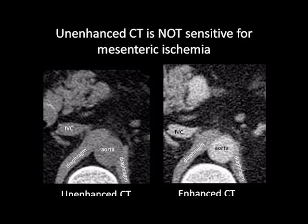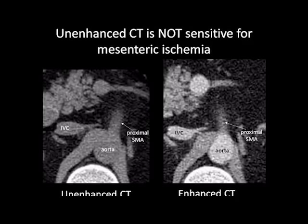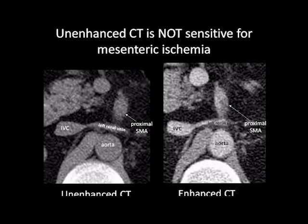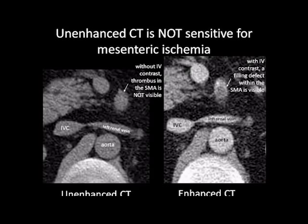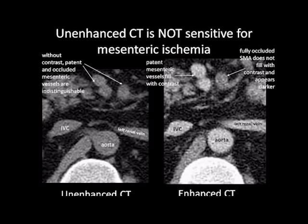As we descend into the abdomen, the proximal superior mesenteric artery, or SMA, becomes visible. Let's track this vessel as it leaves the aorta. The left renal vein comes into view, entering the inferior vena cava; it normally passes beneath the proximal SMA. Without IV contrast, thrombus in the SMA is not visible on the left-hand side. In the right-hand image with IV contrast, a filling defect within the SMA is visible. With IV contrast, patent mesenteric vessels fill with contrast, while the fully occluded SMA does not fill and appears darker.